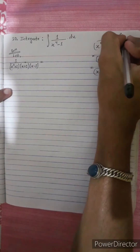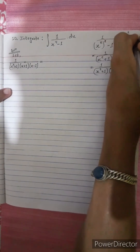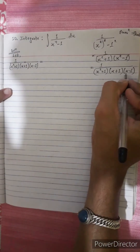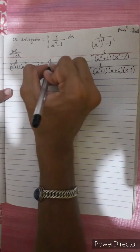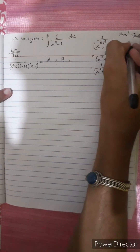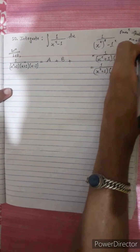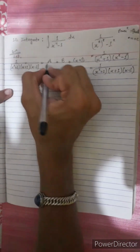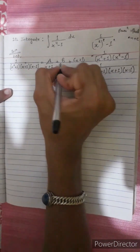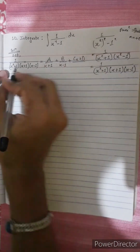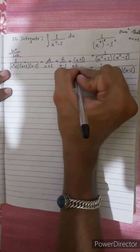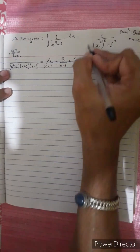This is a quadratic equation in the denominator. We also have linear equation terms of the form ax plus b. The partial fractions will have the form: A over (x plus 1), B over (x minus 1), plus (cx plus d) over (x² plus 1).